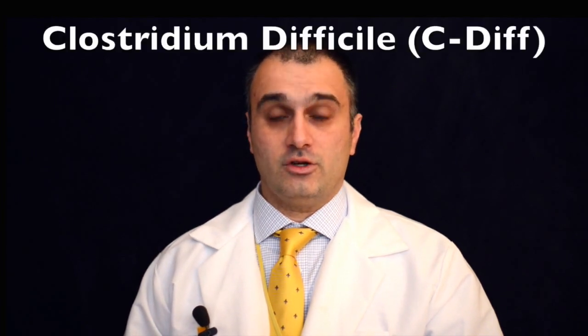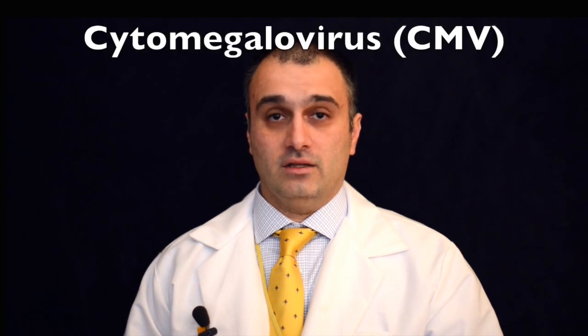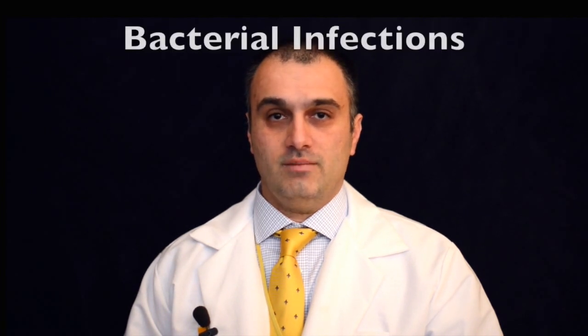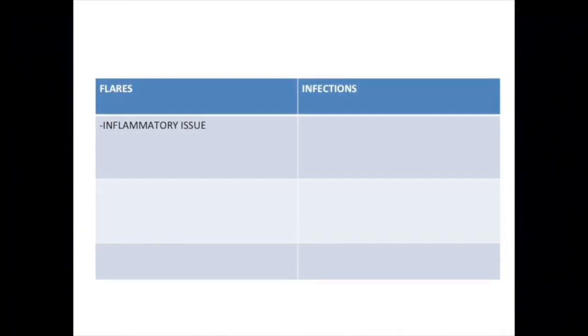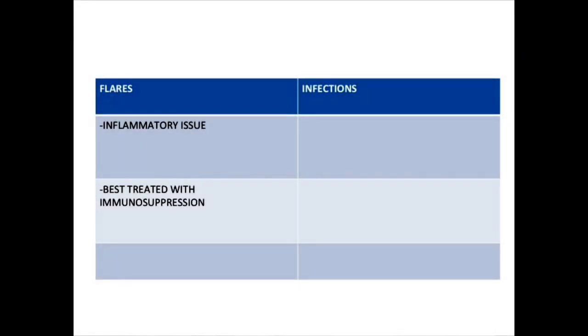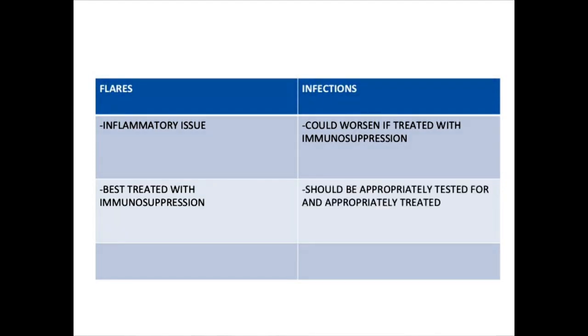Specifically, we will talk about Clostridium difficile or C. diff, cytomegalovirus or CMV, and bacterial infections of the intestines. All of these infections can look like and feel like a flare, but are actually quite different and will require different treatments than flares do. It's very important to understand the difference between a flare and these kinds of infections. A flare is an inflammatory issue that is treated with immunosuppression. Some of these other infections, if treated with immunosuppression, could actually become worse. These infections should instead be appropriately tested for, then treated with the appropriate antibacterial or antiviral medications to improve a patient's symptoms.